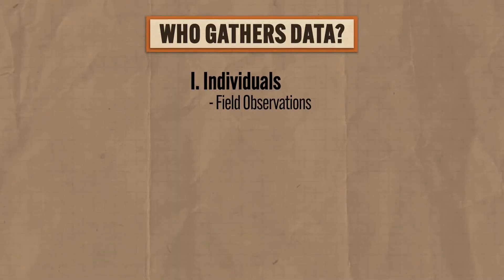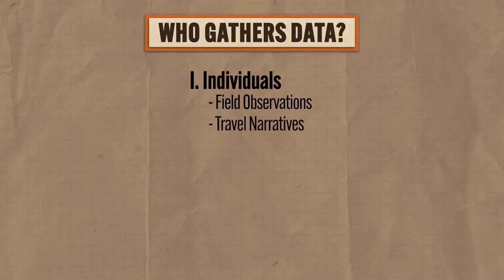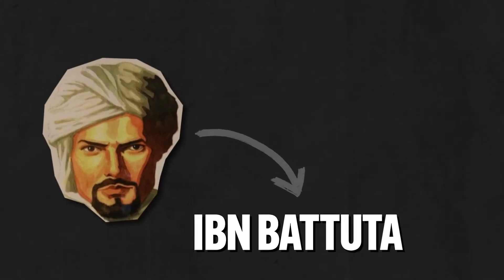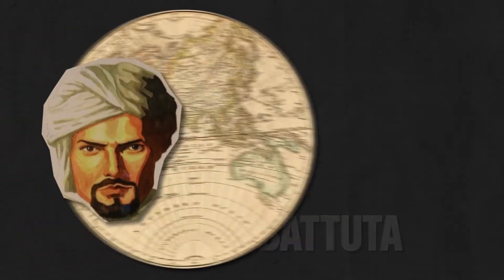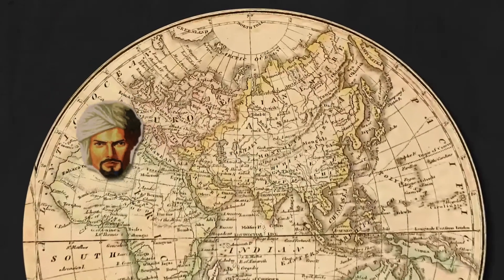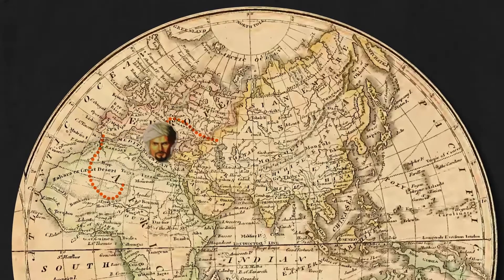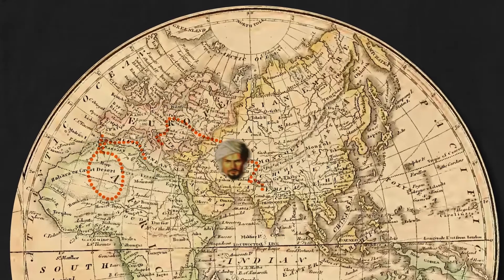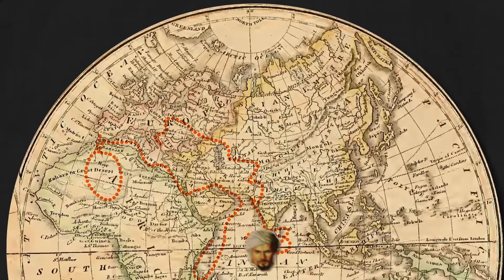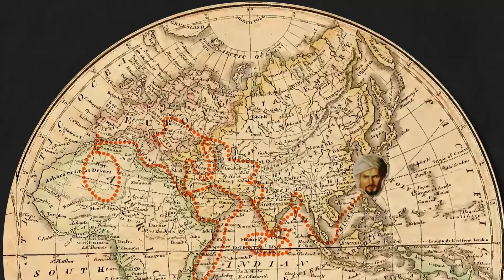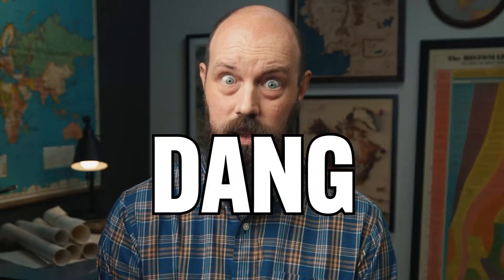They might write an account, take photographs, or interview residents through questionnaires. In addition to field observations, geographic data can be gathered through travel narratives, which are written accounts of a person's travels. For example, our boy Ibn Battuta, a Muslim scholar and explorer in the 14th century, traveled something like 75,000 miles in his lifetime. His travel narrative was packed with geographic and cultural observations that had significant effects on map making during that period and beyond.